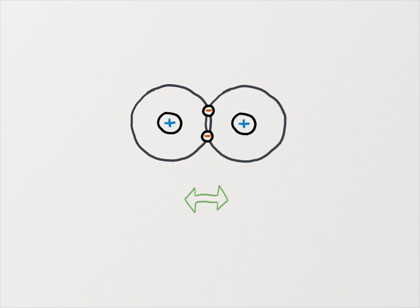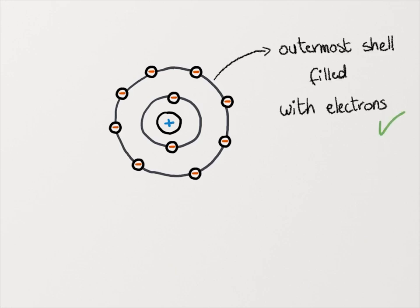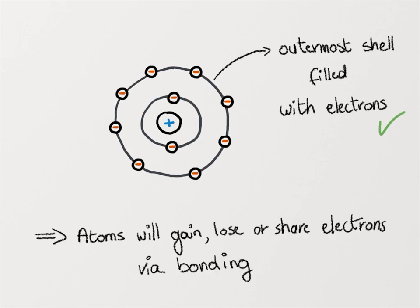Most atoms become more stable when their outermost shell can be filled with electrons. So what happens is atoms either try to gain or lose and share electrons via bonding in order to achieve this full arrangement of electrons in their outermost shell.